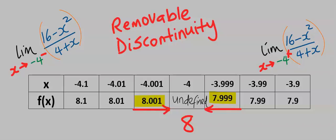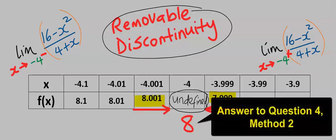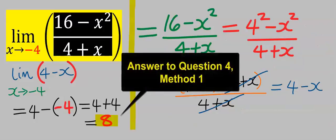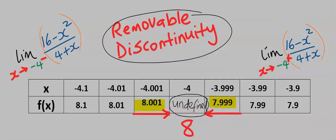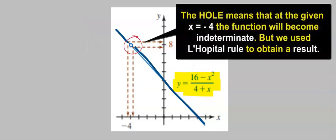This hole we removed is called a removable discontinuity, because at exactly the point of minus 4 the function would have ceased to exist. However, after applying L'Hôpital's rule or drawing up a table, we obtained the answer 8, the same as when we applied the difference of two squares. Drawing the graph of this function using the numerical values from the table gives a straight line, but you can observe a hole due to the removable discontinuity. As we approach the limit from the left we got 8, and equally from the right we got 8, as x tends to minus 4.